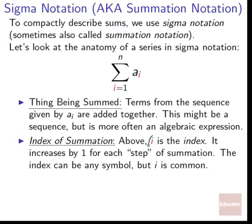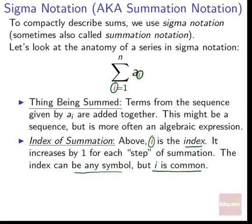Next, the index of summation: i is the index. It increases by one for each step of summation — we do the first thing, then add the second thing, then the third, and so on. Every time we step forward, the index clicks up by one. The index can be any symbol, but i is very common and that's what we'll use for the most part. Notice how i generally occurs in the expression as well — that's the thing that changes with each step.